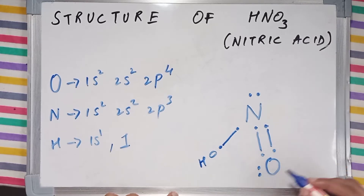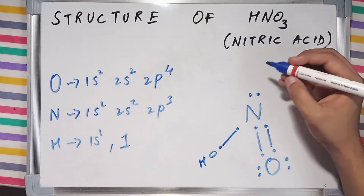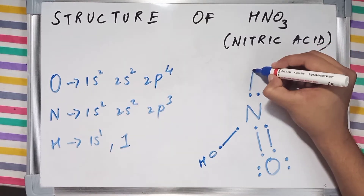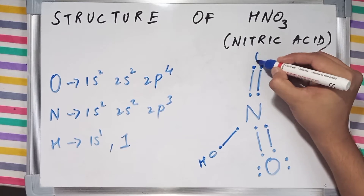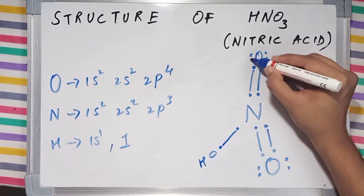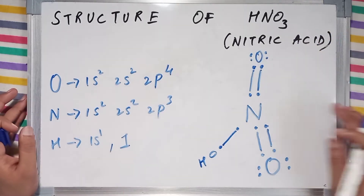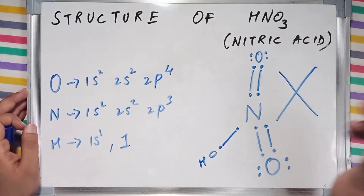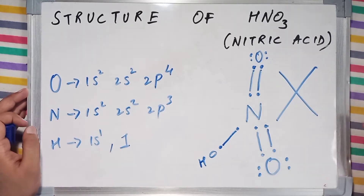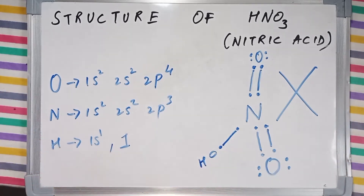Oxygen has two lone pairs. Similarly, this oxygen is also going to make a bond having two lone pairs. So you might be thinking that this is the structure of nitric acid, whereas it is not — and this is where it gets complicated. Let me show you why this isn't the structure of nitric acid.